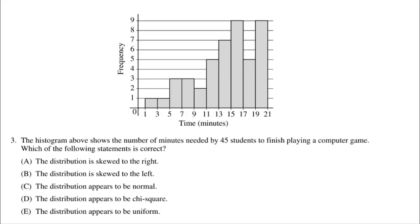This problem shows a histogram of the number of minutes needed by 45 students to finish playing a computer game, and asks which statement is correct. Histograms are set up into bins — this bin covers students who finished from one up to just under three minutes. When we see the majority of the data on the right-hand side with less and less data to the left, that is skewed to the left. So the correct choice is skewed left.